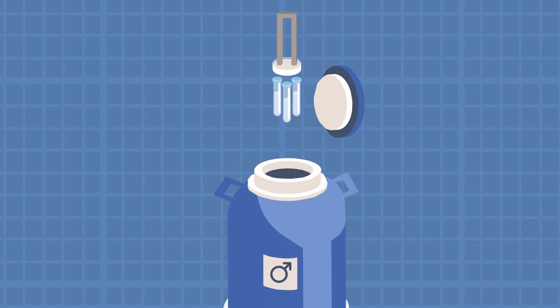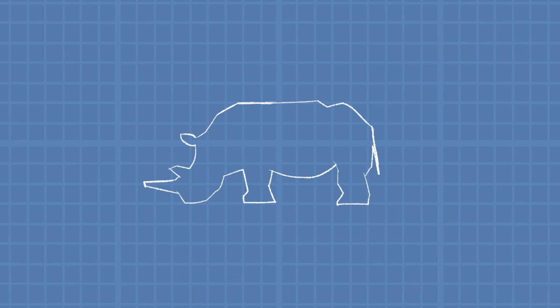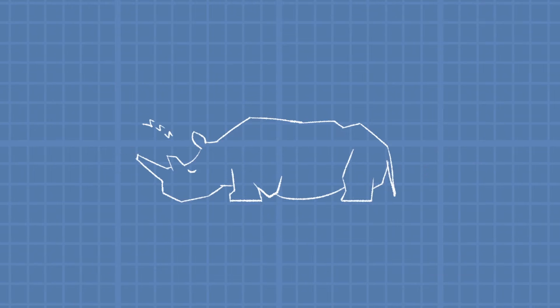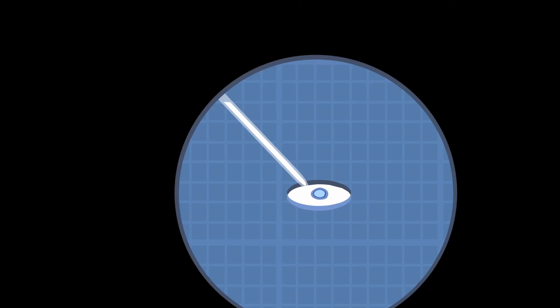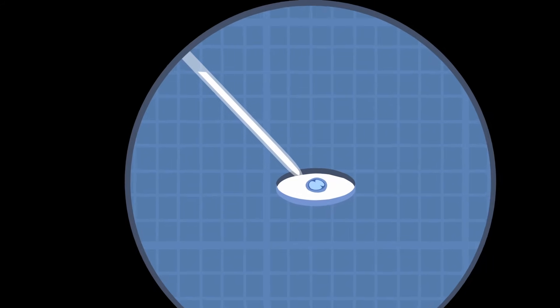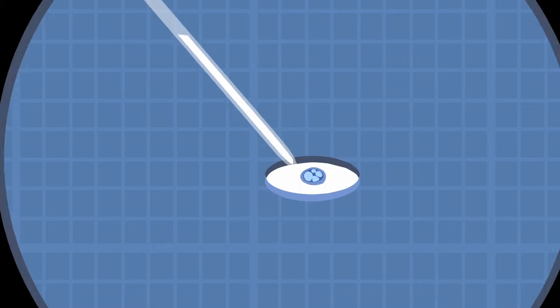Though scientists had stored semen, they would have to collect the eggs—a complex procedure that requires a female to be sedated for up to two hours. Then, they'd create a viable embryo in the lab—something that had never been done before and no one knew how to do. Even that was just the beginning.